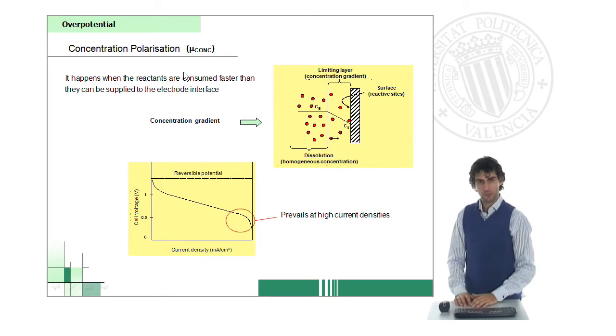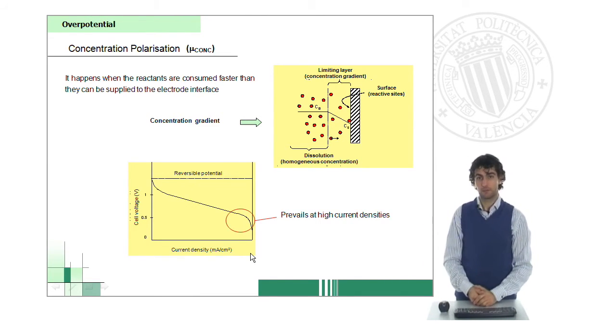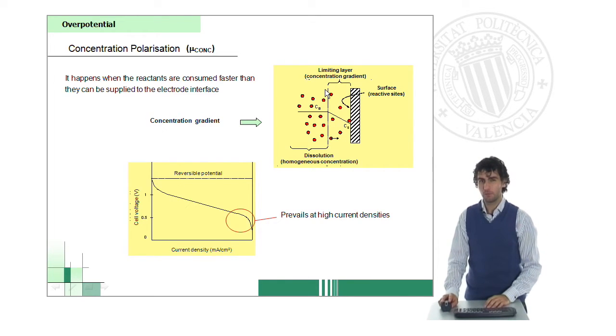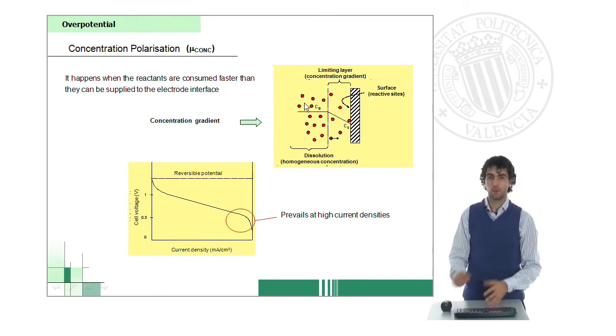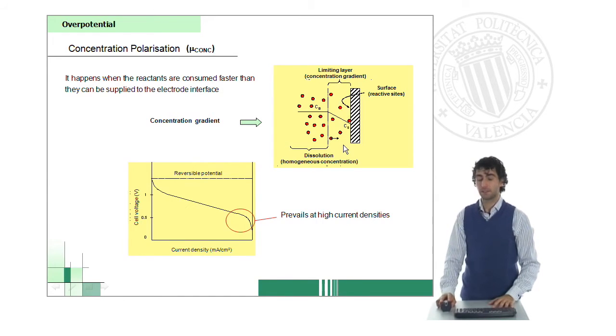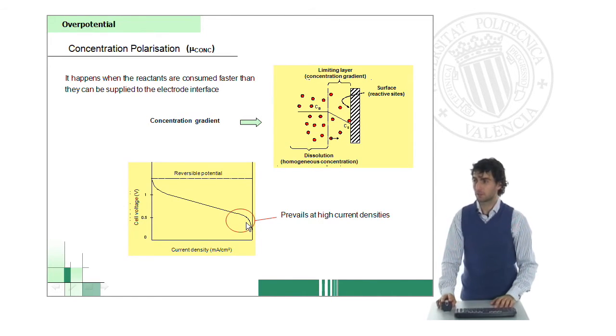Finally, last one is concentration polarization, which occurs at current densities which are very high. I mean, when the reaction is really, really, really quick. And it happens because, at some point, it's very complicated for the hydrogen molecules or the fuel molecules to get in contact with the surface when the reactions take place. So, there's a concentration gradient in some layer, and then the reaction somehow slows down, because it requires more energy to carry out these electrochemical reactions. So, this is called concentration polarization.